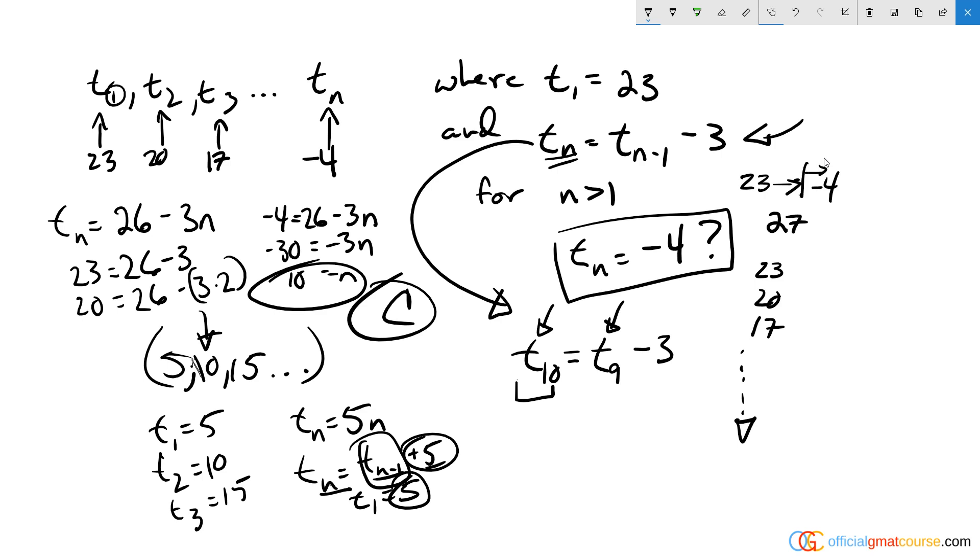And 27 over steps of 3 is nine steps. But we're starting at t sub 1, so nine steps from t sub 1 is going to get us to t sub 10.